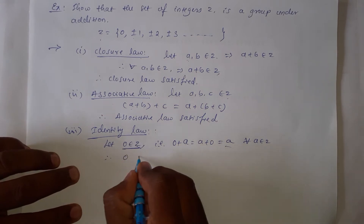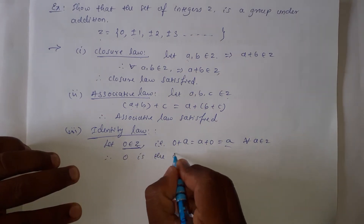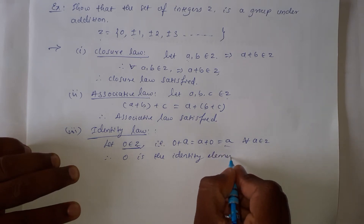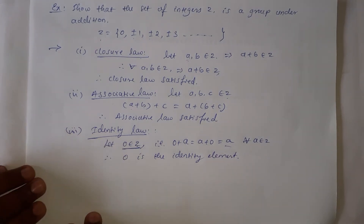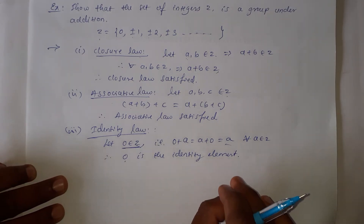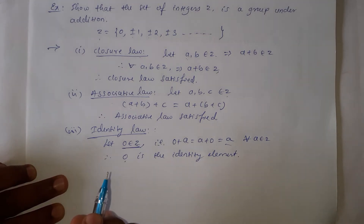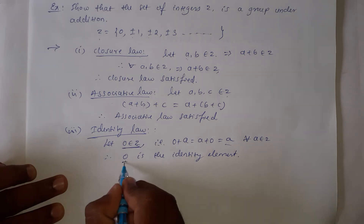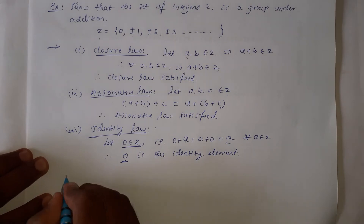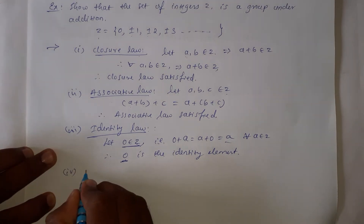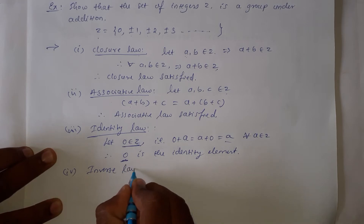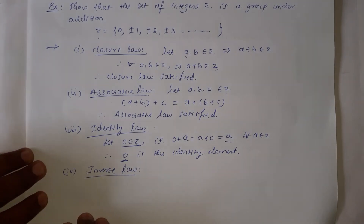Therefore, 0 is the identity element. In general, 0 is the identity element for the binary operation addition. If the binary operation is addition, it is fixed that 0 is the identity element.